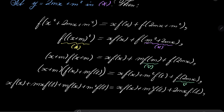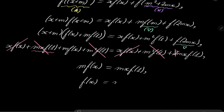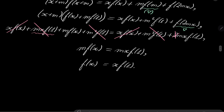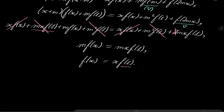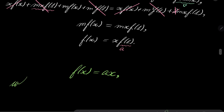Now it's time for some cancellations. x times f of x cancels with x times f of x. m squared times f of 1 cancels with m squared times f of 1. And mx times f of 1 cancels with the 2mx times f of 1 term partially, leaving m times f of x equals mx times f of 1. After division by m, we get f of x equals x times f of 1. Setting f of 1 to be some constant a, we see that f of x must equal a times x, where a is of course a rational number.